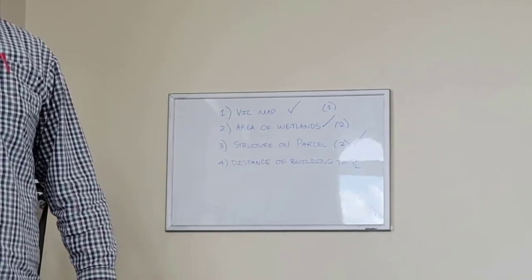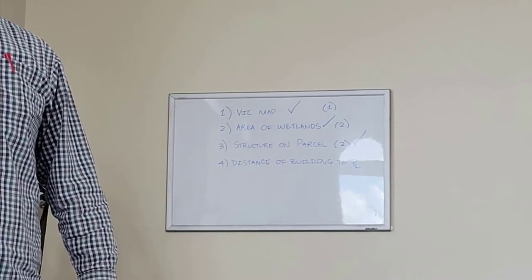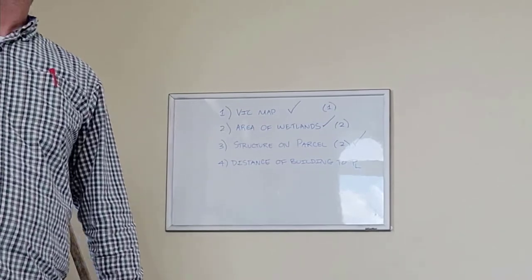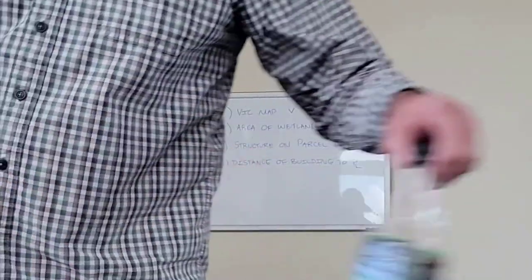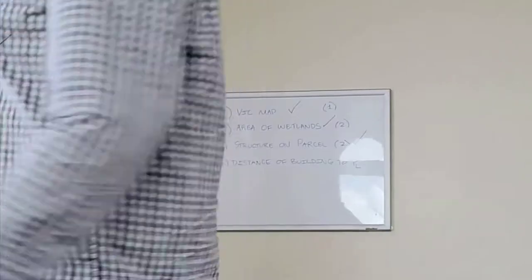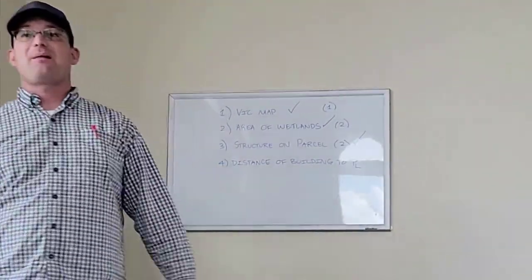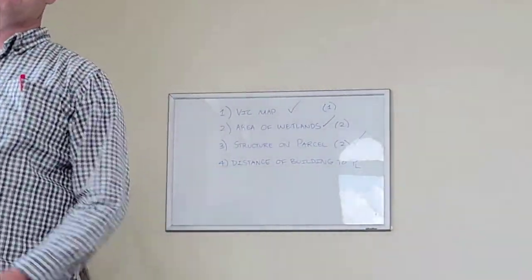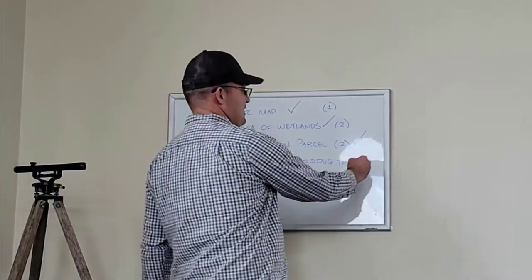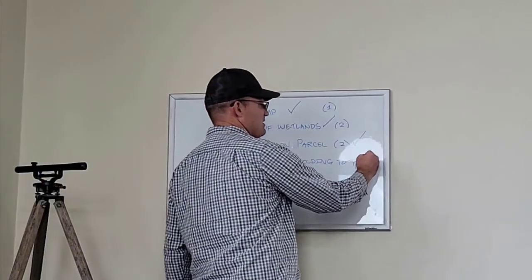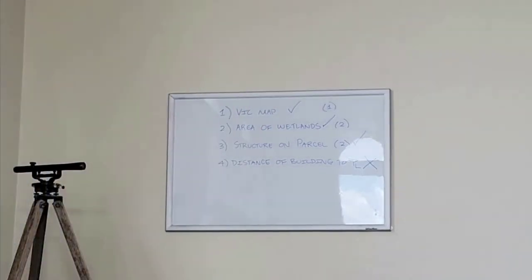That's part of what makes us surveyors — we don't just click buttons in QGIS. We ask questions and we understand how the client is going to use our data. Now for the last example: I want to get the distance of a building to a property line to verify setback. Can we use QGIS for that? Absolutely not. We've exceeded the acceptable use of QGIS to reproject data.